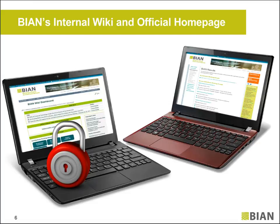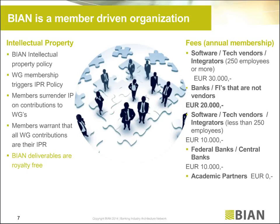I want to explain the difference between a BIAN member and a non-member. Non-members have access to all published material like the white paper, and the BIAN landscape — non-members have an HTML version available. BIAN members have access to a UML version and all work-in-progress material and support, while non-members only have access to published material.